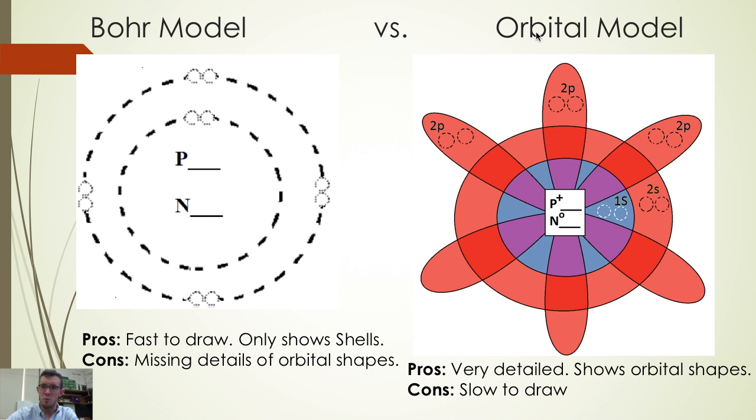If we wanted to we could make a more complete model of the atom that included those orbital shapes. The pros of this type of model would be that it's very detailed and shows all the shapes, but it would take a significantly longer amount of time to draw.